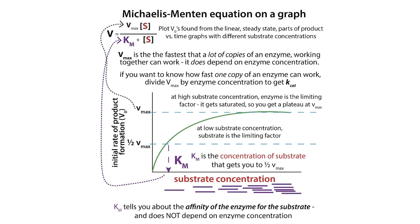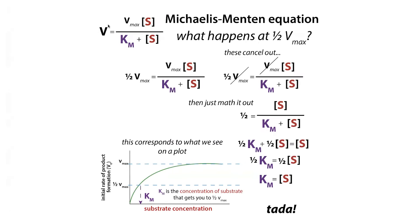What is happening that's special when you have the Km equal to one half of the Vmax? The V is just any velocity under these conditions, and the Vmax is the maximum velocity — which we get when we've basically saturated our enzyme so each enzyme is working at its maximum capacity. When we set our velocity equal to half the maximum velocity, those Vmax terms cancel out, and with a little math and rearranging you get that Km is equal to the substrate concentration. This shows why the Km is going to be the concentration at which you get half of your Vmax.